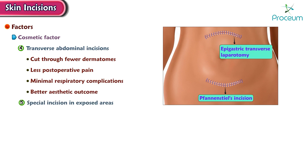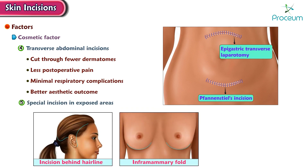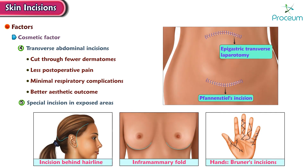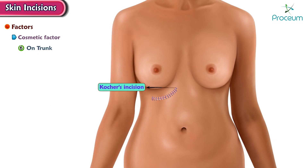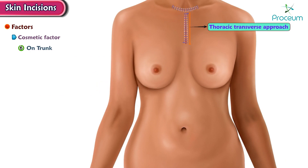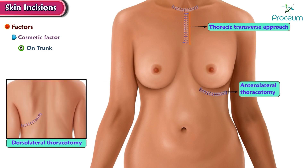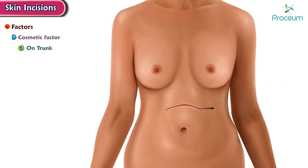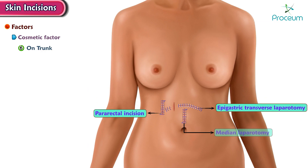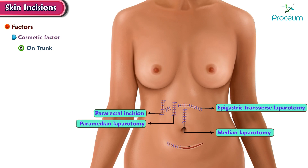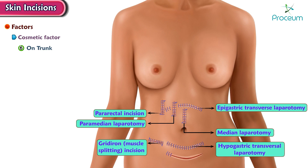As a result, there is less post-operative pain, and transverse incisions are associated with minimal respiratory complications and a better aesthetic outcome. Special incisions in exposed areas include incisions behind the hairline, in the inframammary fold, and Brunner's incisions on the hands. On the trunk: Kocher's incision, median sternotomy, thoracic transversal approach, dorsal lateral and anterolateral thoracotomy, subcostal incision, epigastric median laparotomy, epigastric transverse laparotomy, pararectal incision, median laparotomy, paramedian laparotomy, hypogastric transversal laparotomy, gridiron muscle-splitting incision, and Lanz incision.